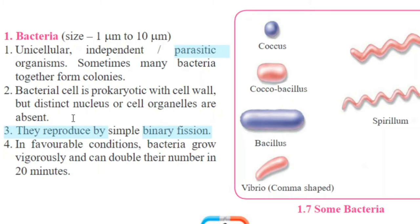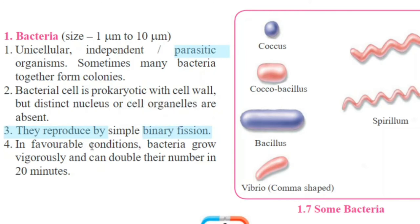Bacteria reproduce by simple binary fission. Binary fission means from one parent cell, two daughter cells are formed. Fourth characteristic: in favorable conditions, bacteria grow vigorously and can double their number in 20 minutes. When there is a proper temperature and environmental condition, their growth occurs very fast. Therefore, the number of microorganisms is very huge among all living organisms.